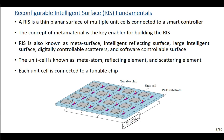The research field behind building the RIS is the research field of metamaterials, which is interested in building materials with reconfigurable electromagnetic wave properties that don't exist in natural materials. That's why the RIS is known as a meta-surface, in addition to many other names such as an intelligent reflecting surface, a large intelligent surface, digitally controllable scatters, and software controllable surface.